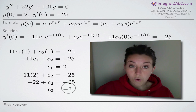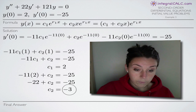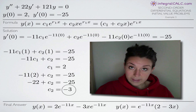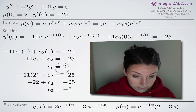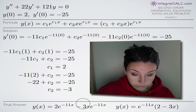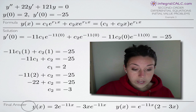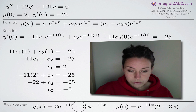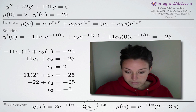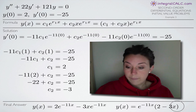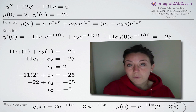Our whole goal was to solve for c₁ and c₂, and now that we've done that, we plug back into our original equation for y(x). c₁ = 2 goes in for c₁ and −3 goes in for c₂. We could leave it exactly as is, or we can factor out e^(−11x) to get e^(−11x)(2 − 3x), which is a clean way of writing our final answer.